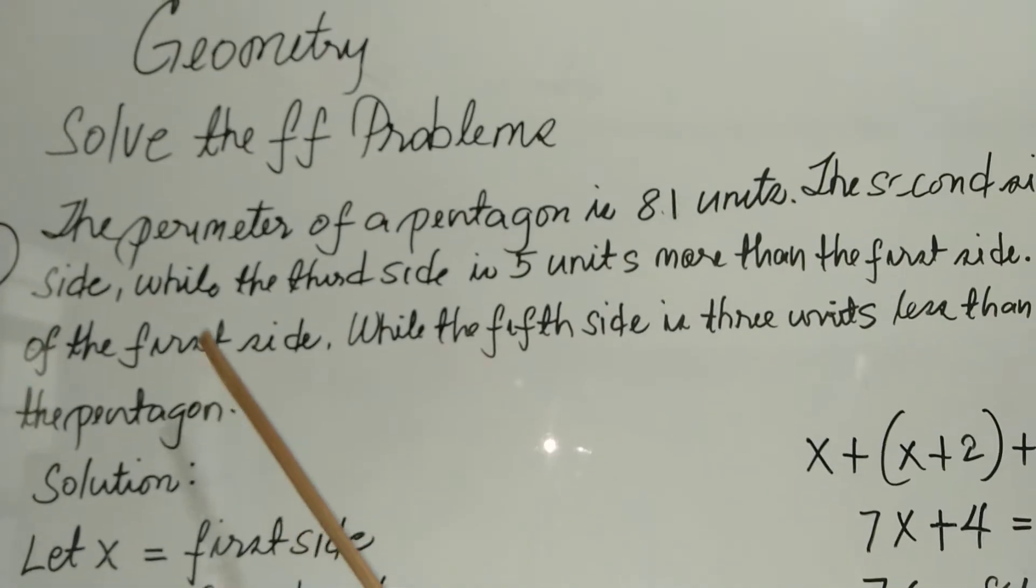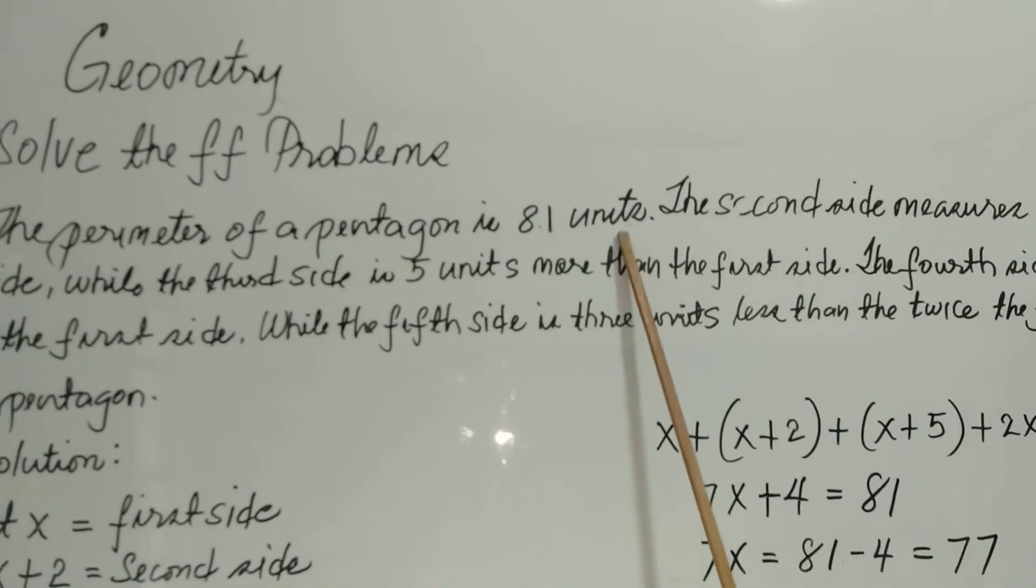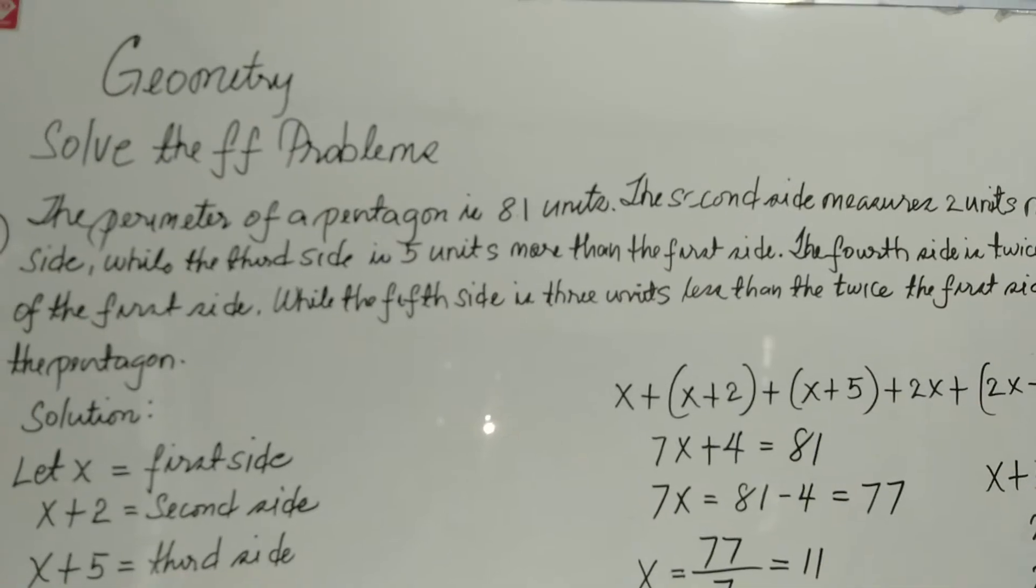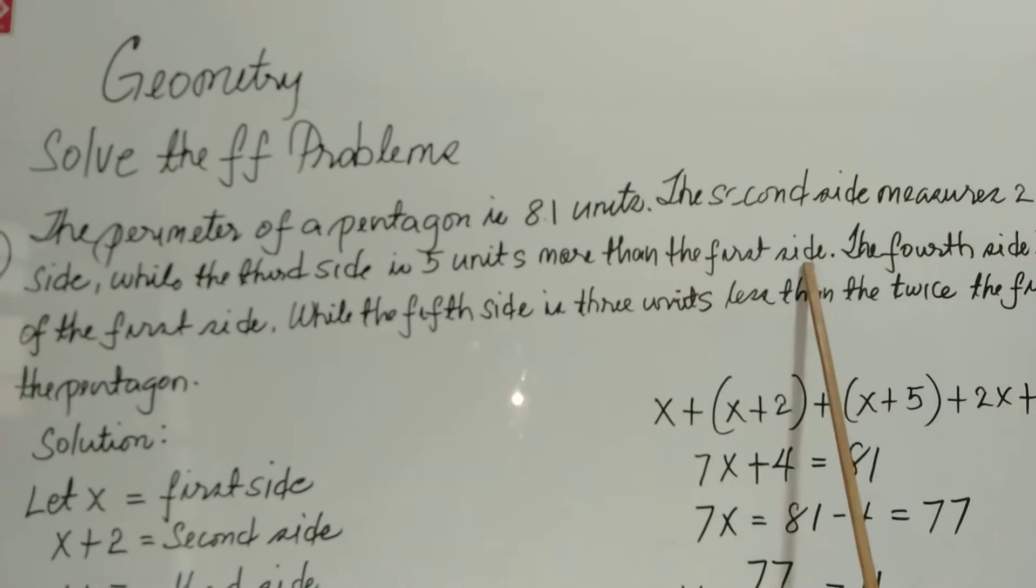It says that the perimeter of a pentagon is 81 units. The second side measures 2 units more than the first side, while the third side is 5 units more than the first side.